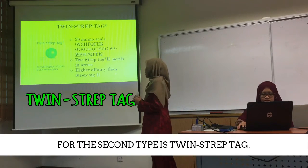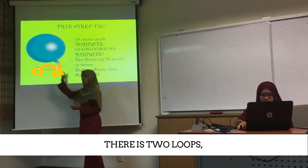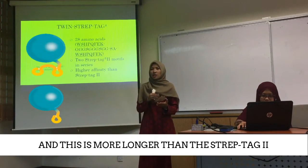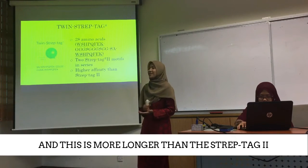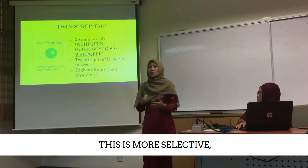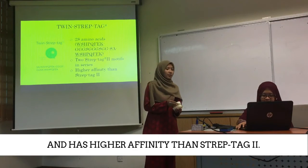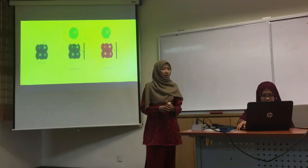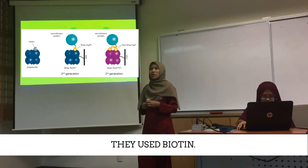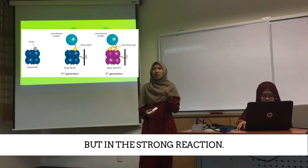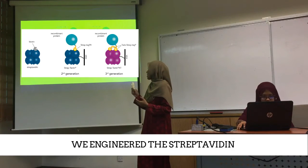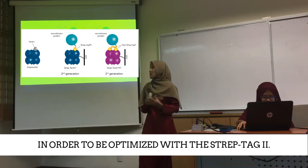For the second type is the twin strep tag. If you can see here, there are two loops, whereas for strep tag 2 there is only one loop, and this is more longer than strep tag 2. Strep tag is a ligand and before this, the old version used biotin. Biotin can interact with the protein but in a strong reaction so it's difficult to elute the protein. So the twin strep tag was added to strep tag 2 in order to optimize it.